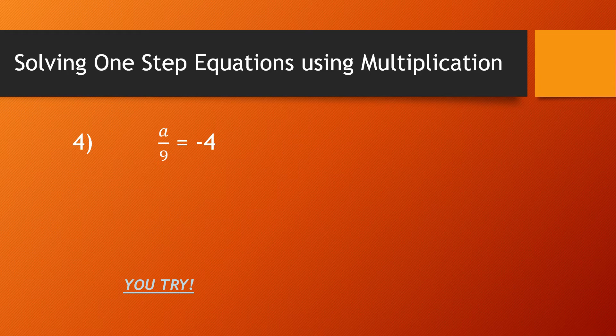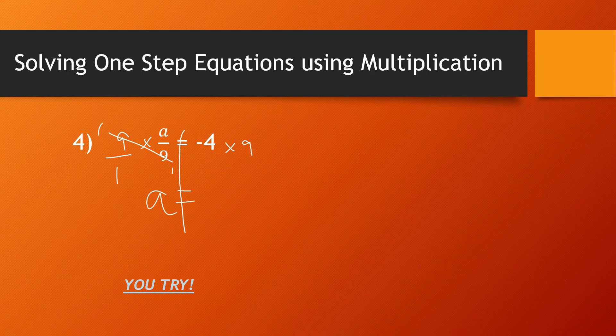Looking at this one, I have a fraction. Remember a fraction shows dividing, so the opposite of dividing is to multiply. I'll draw my line. I have a divided by 9 equals negative 4, so if it's divided by 9 I'm going to multiply by 9 over 1. Diagonally those 9s cancel to ones, and all those ones don't mean anything — I would have 1 times a, which is just a, and a over 1 is just a. So a equals negative 4 times 9, which is negative 36.